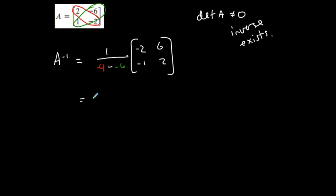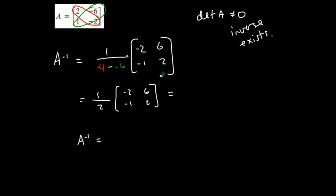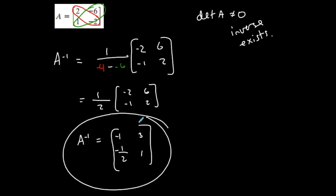So let's keep going. This is negative 4 plus 6, so 1 half times this matrix. Now I have a scalar times a matrix, so that scalar has to go into the matrix. A inverse equals: 1 half times negative 2 is negative 1; 1 half times 6 is 3; 1 half times negative 1 is negative 1 half; and 1 half times 2 is 1. And this is the inverse of matrix A.